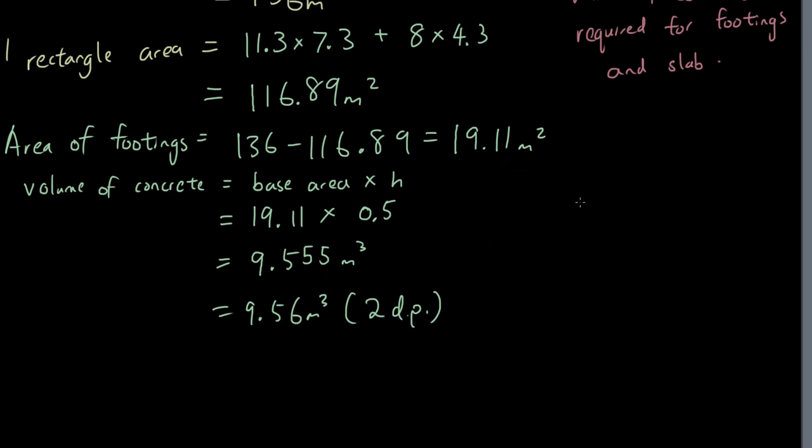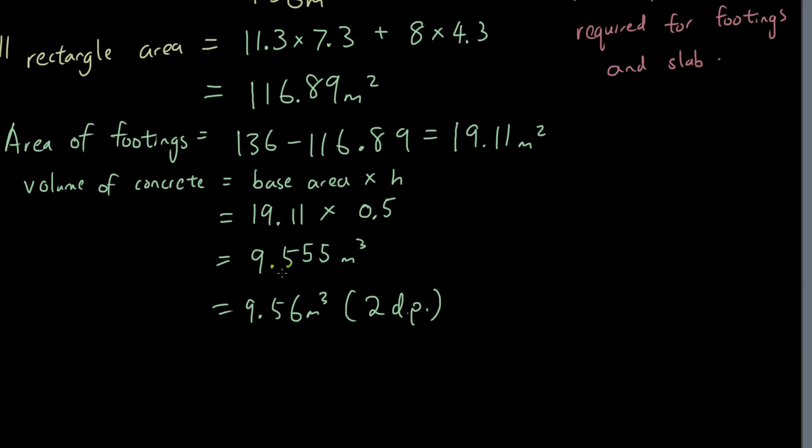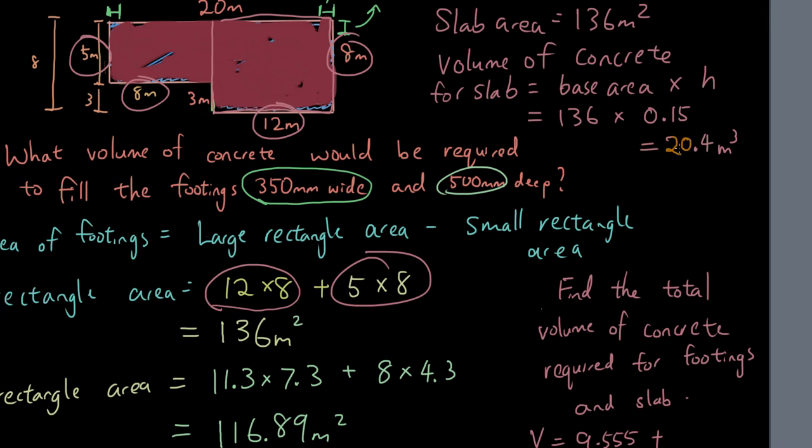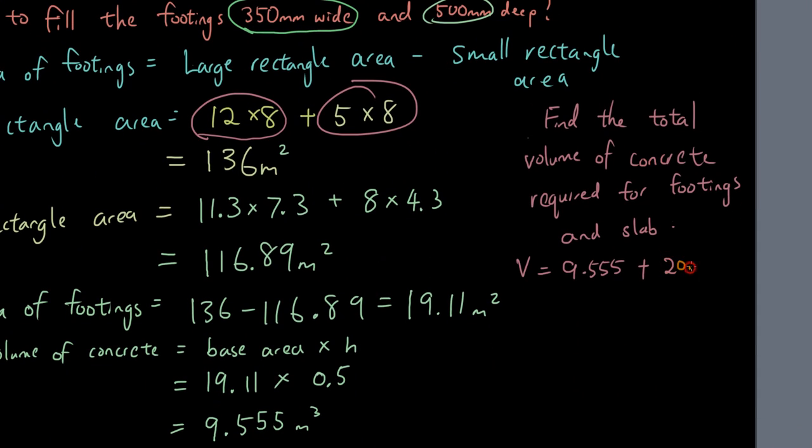So the footings we calculated previously has a volume of 9.555. So the total volume equals 9.555 for the footings, and then we got the 20.4 for the slab. So in total that's 29.955 meters cubed.